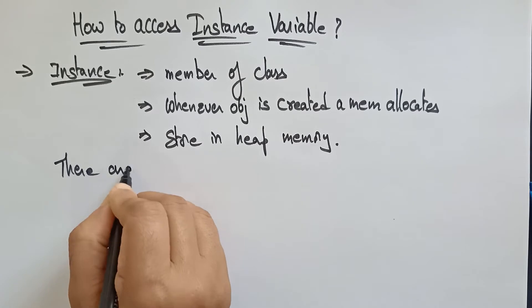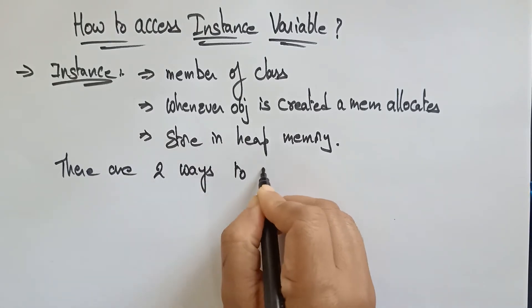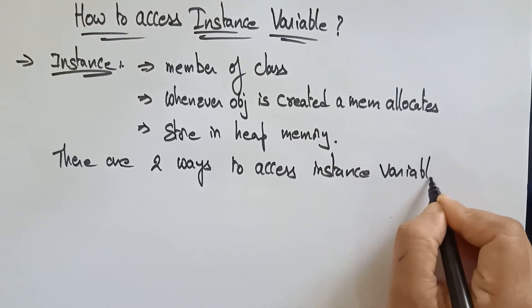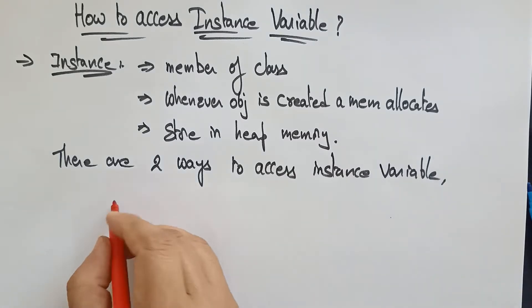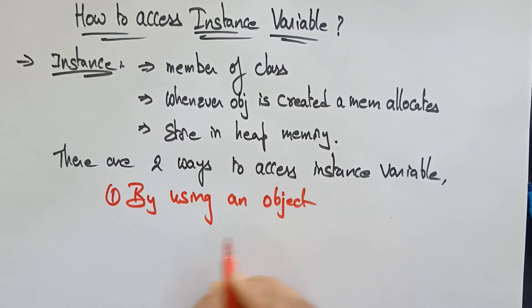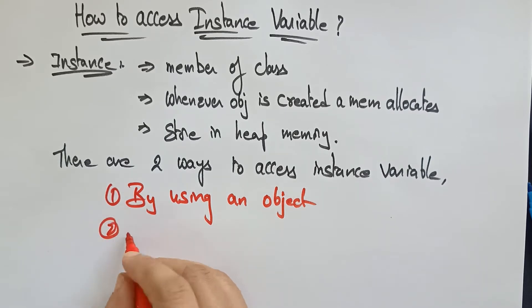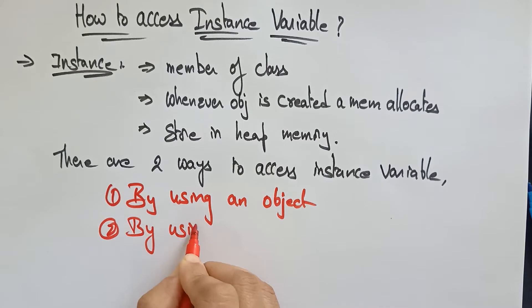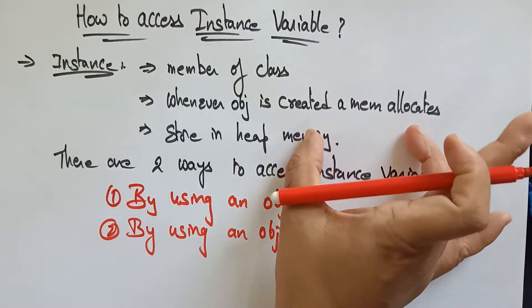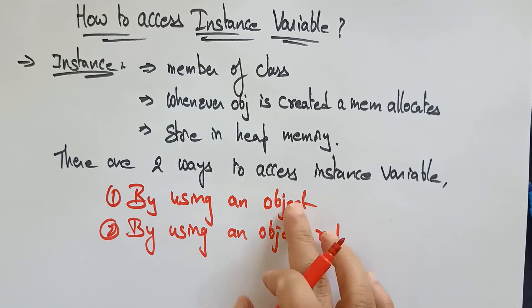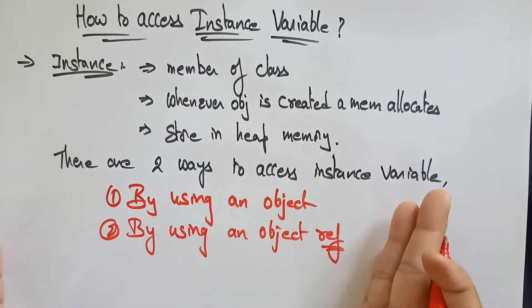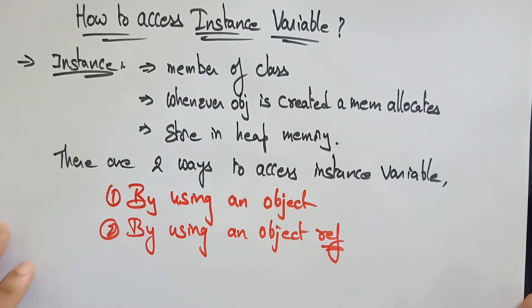Generally there are two ways to access an instance variable. Can you guess what the two ways are? One is by using an object, and the other is by using an object reference. The reason we use an object is because the instance variable's memory is allocated only when the object is created. So we access it using an object or an object reference.